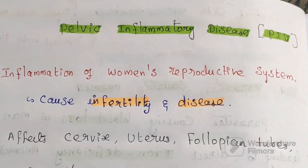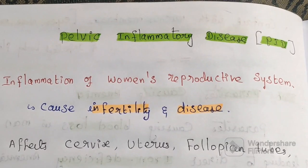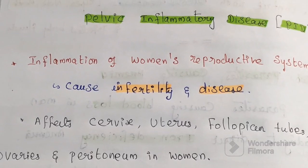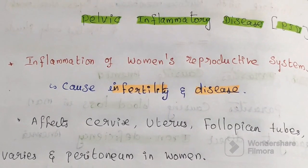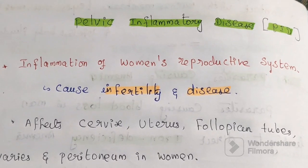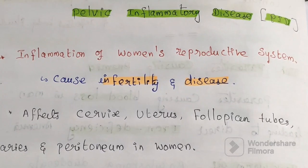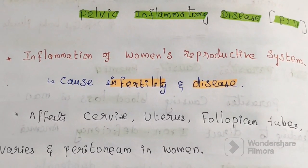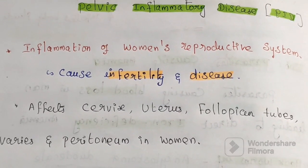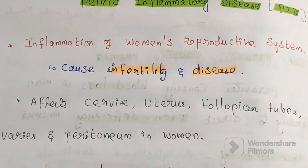Today's topic of discussion is Pelvic Inflammatory Disease, PID. Pelvic Inflammatory Disease is an inflammation of the women's reproductive system. It is commonly responsible for causing infertility and diseases in women all over the world.